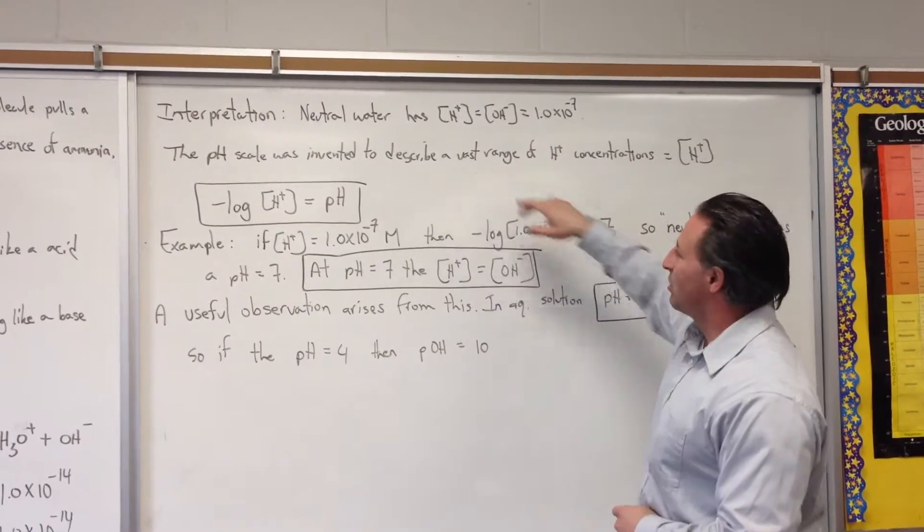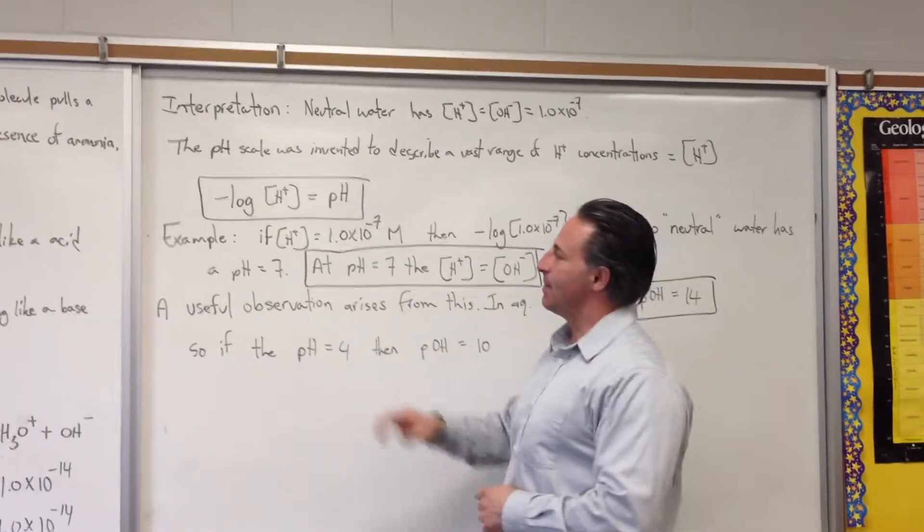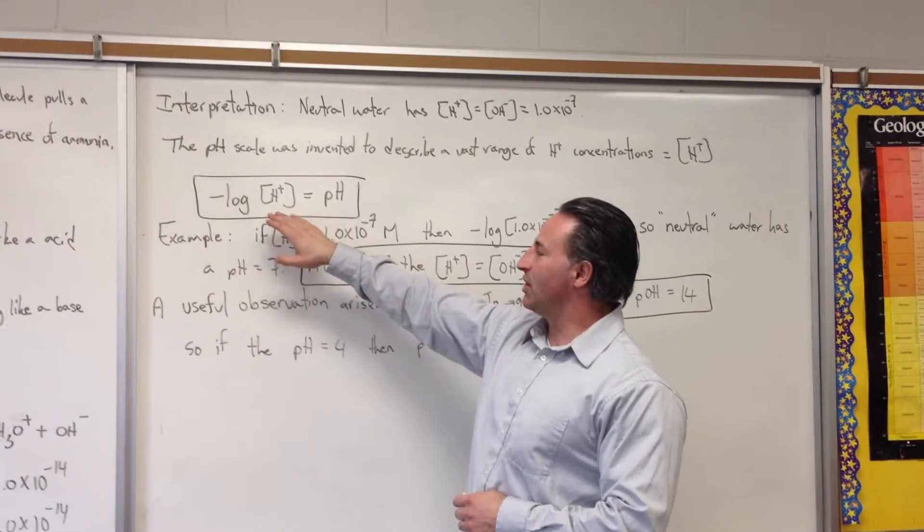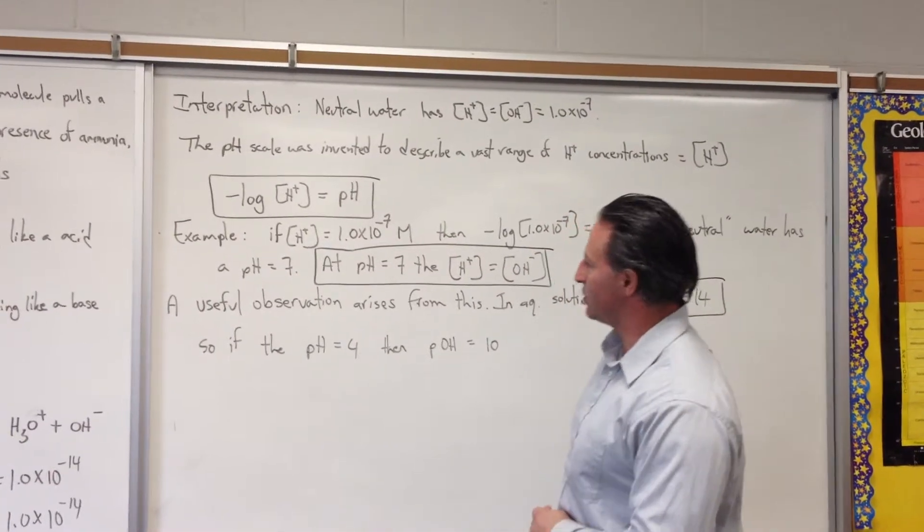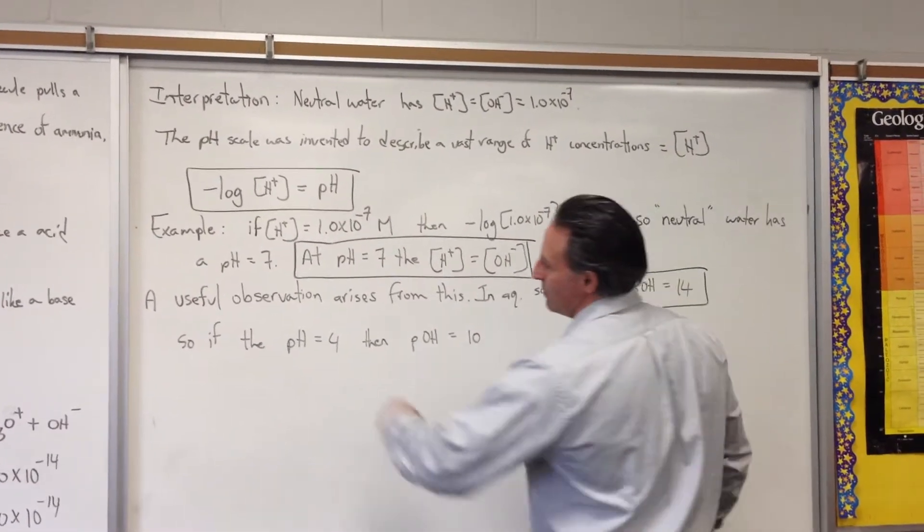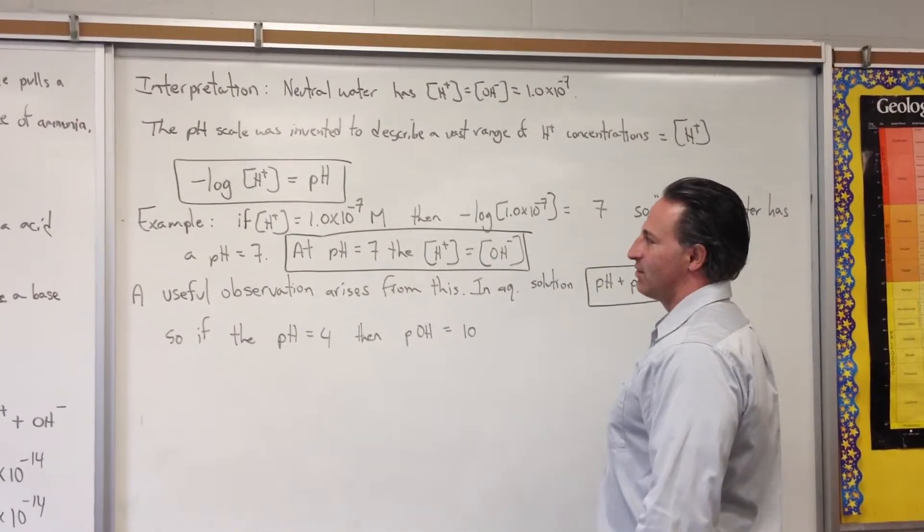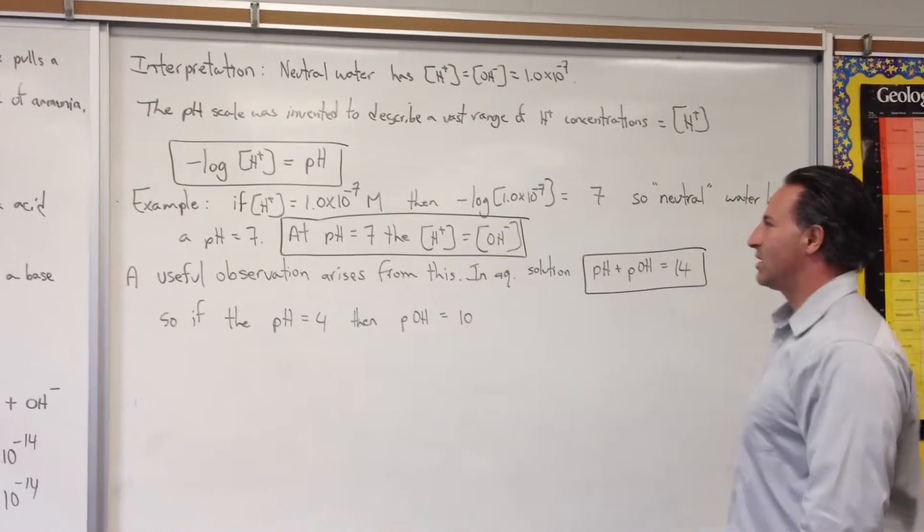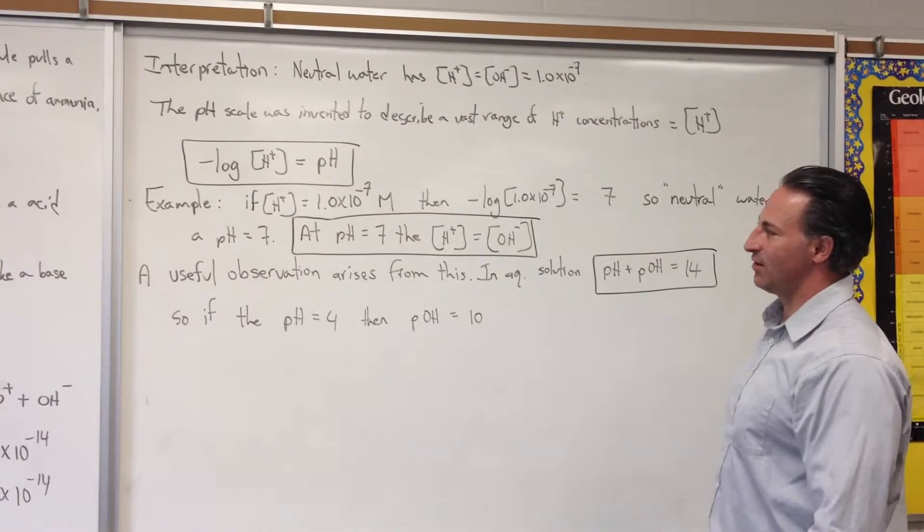The pH scale was invented to describe the vast range of H+ concentrations. They found that if you described it as a logarithmic value and took the negative log of the H+ concentration, you get a value called pH. For example, if the proton concentration is 1.0×10^-7 molar, then the negative log of 1.0×10^-7 gives you 7. So neutral water has a pH of 7.